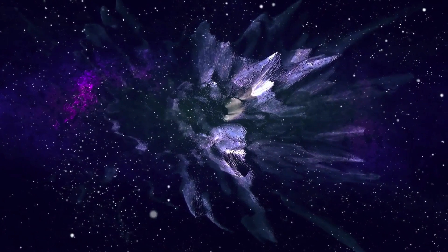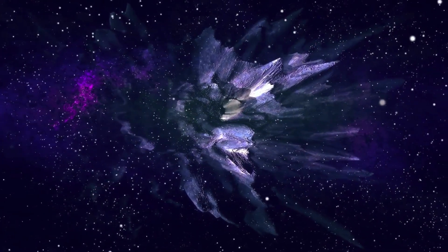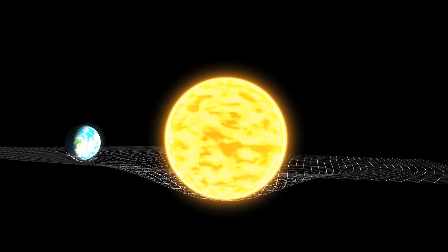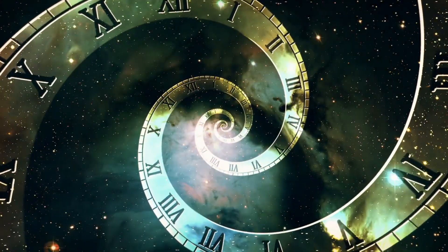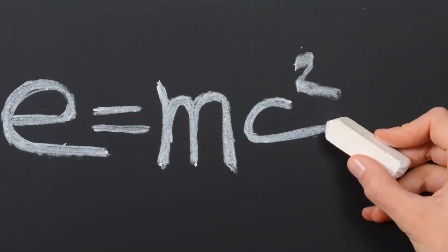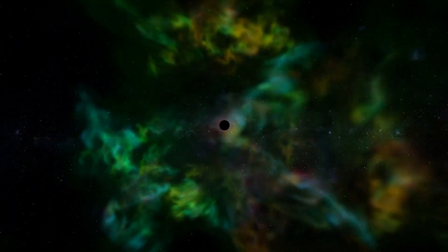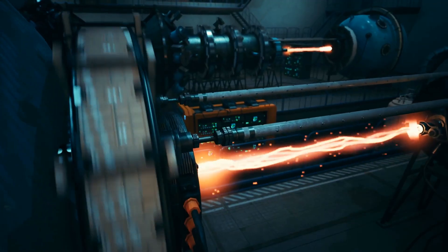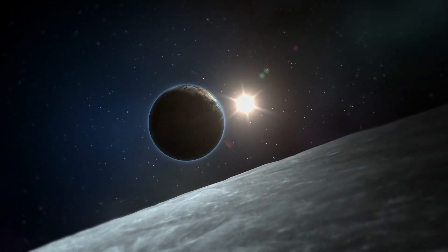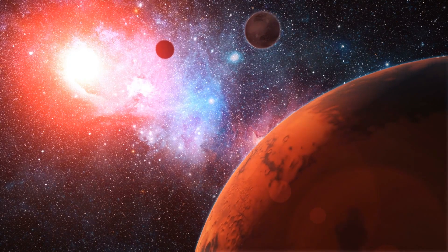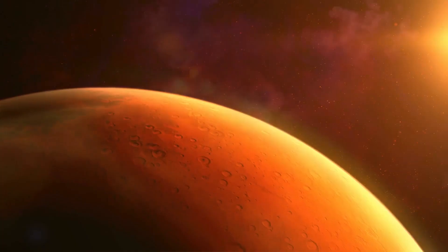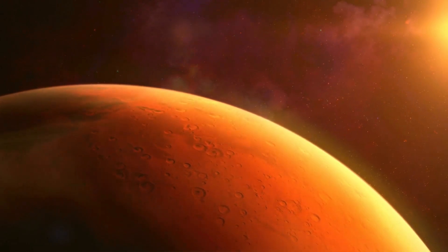Kaku then delves into the revolutionary ideas of Albert Einstein, who overturned Newton's laws with his theory of relativity. Einstein's insights into the nature of space and time helped to explain gravity and the behavior of objects moving near the speed of light. His famous equation, E equals mc squared, revealed the equivalence of mass and energy and gave rise to nuclear power. The God equation should unify the basic concepts of physics into one equation. And what are these basic concepts? Relativity and the quantum theory.